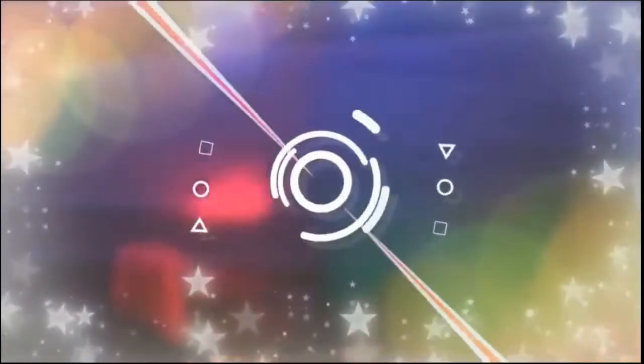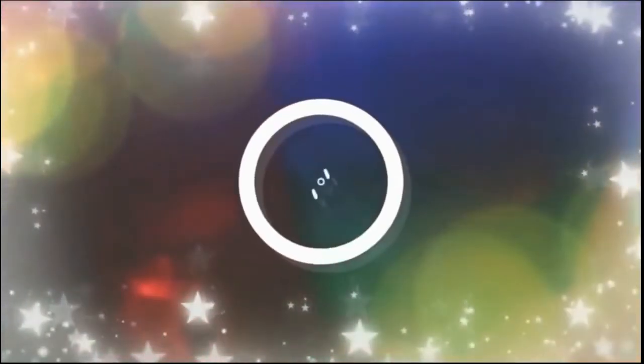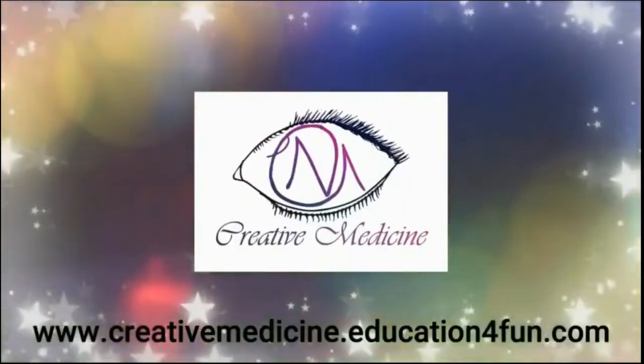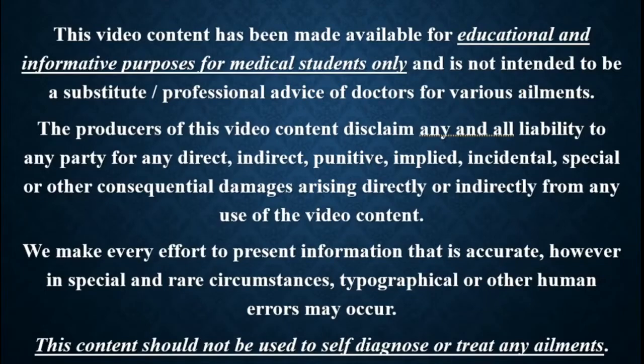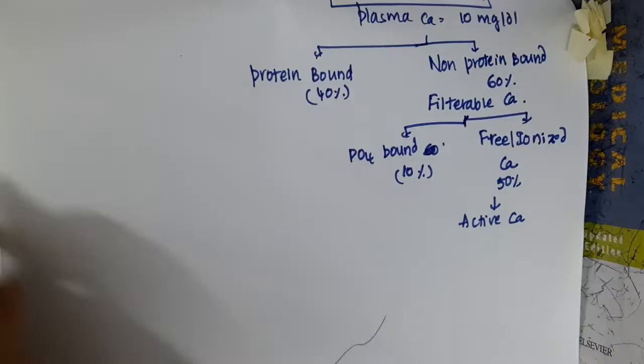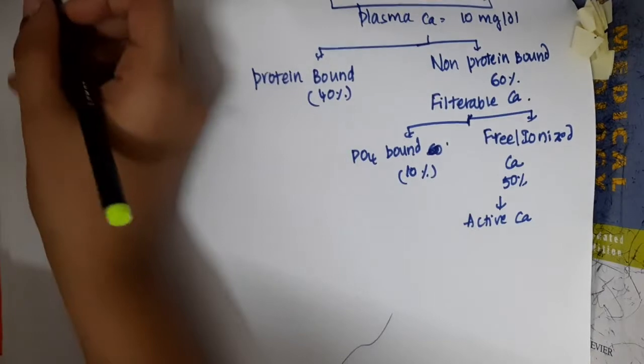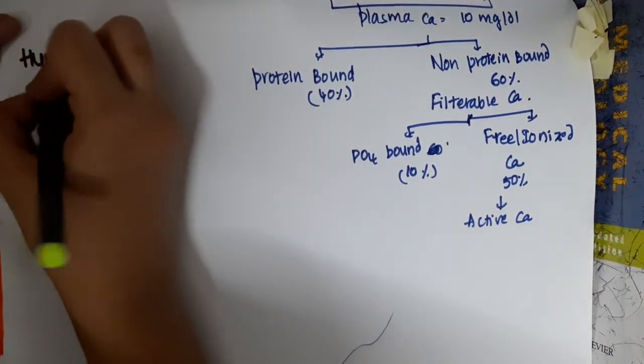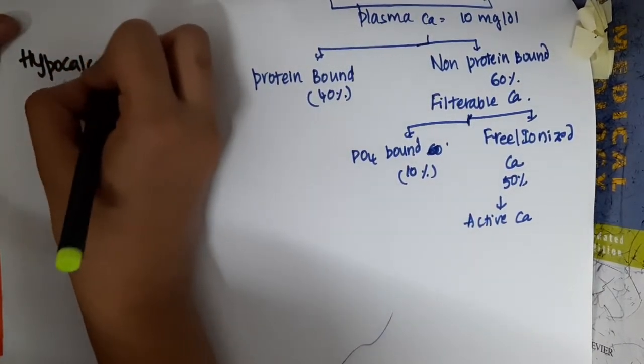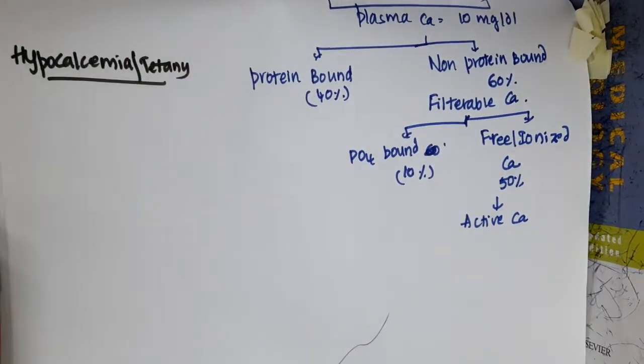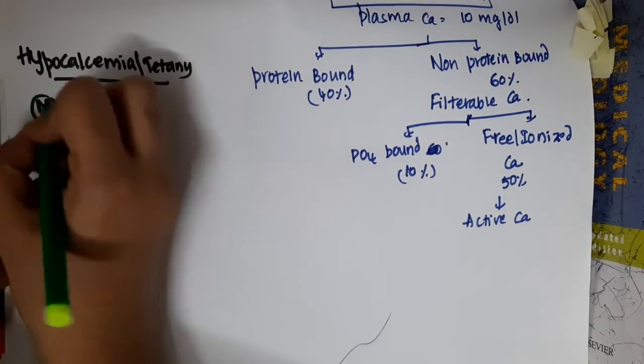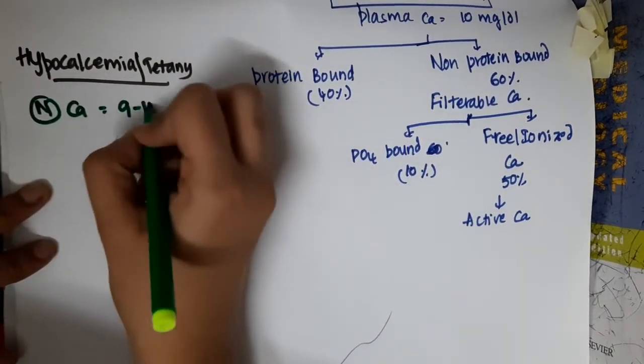Hello friends, welcome to Creative Medicine. In this lecture we will learn some important points about hypocalcemia or tetany. Normal calcium concentration is 9 to 10.5 milligrams per deciliter.